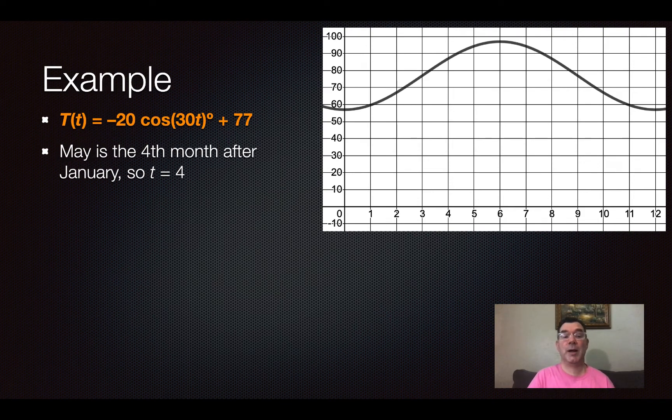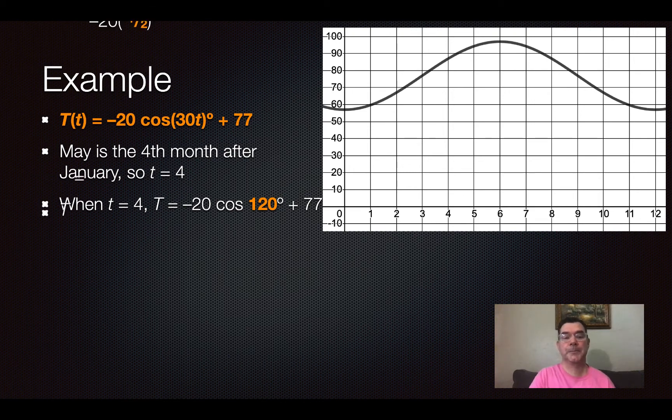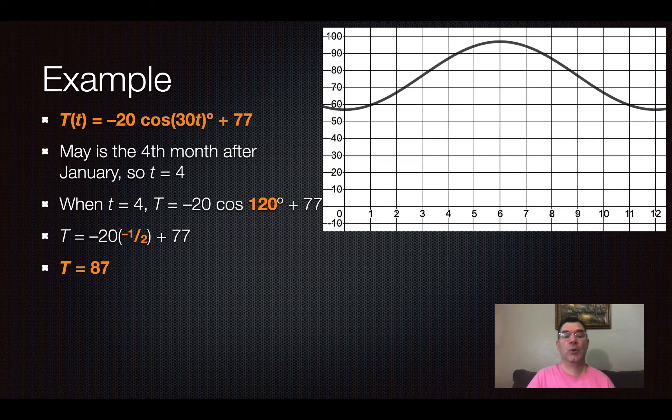May is the fourth month after January. So t is going to equal 4. So when t is equal to 4, that 30t is going to be replaced with 120 degrees. And so the temperature for that month is going to be 87 degrees.